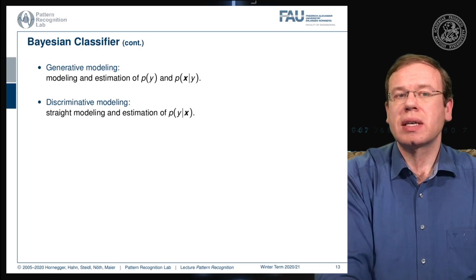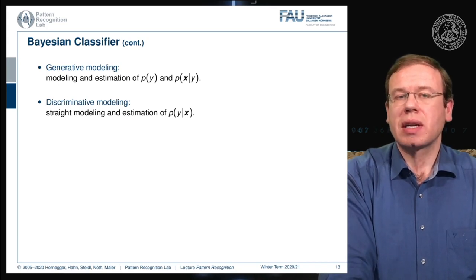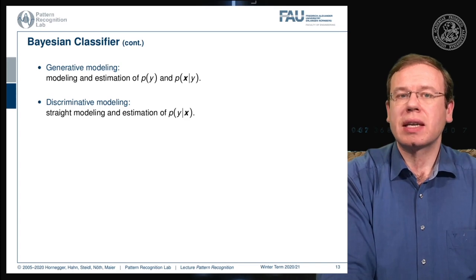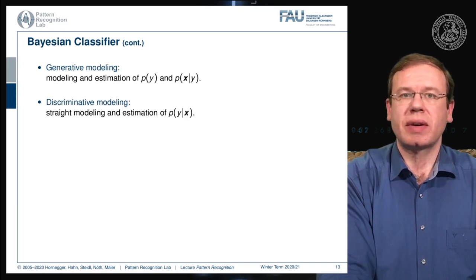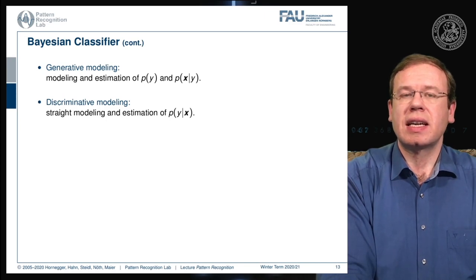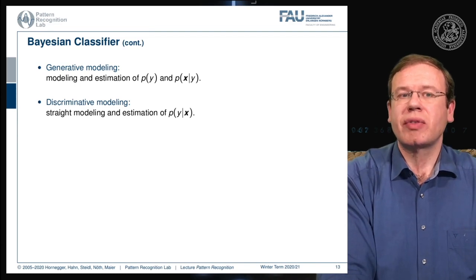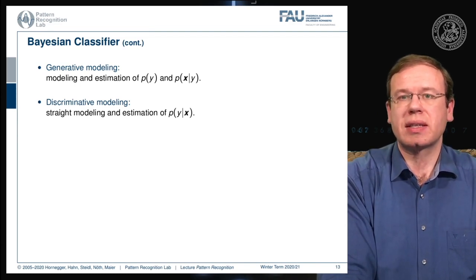And then you do the discriminative modeling in comparison. So here you directly model the probability of the class given the observations and this then enables us to find the decision very quickly. Essentially we are modeling the decision boundary in this case.